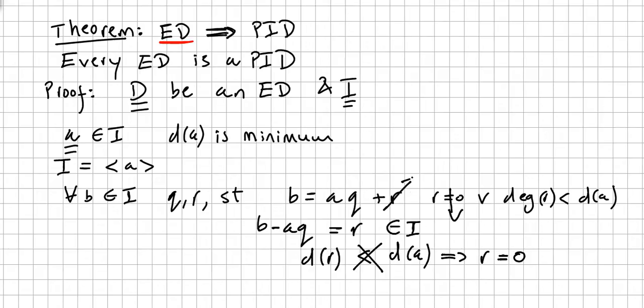So if r is zero, this one is zero, it disappears. So b is generated by aq, right? Is generated by a. So conclusion, big conclusion: b is in the ideal <a>, and that proves the theorem.